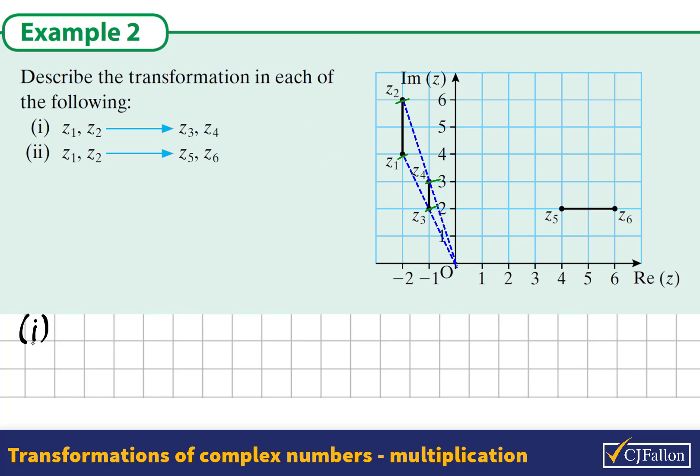We could also work this out because there are numbers given to each of these. However, because there is no rotation and there is a scale factor of a half, the moduli have been reduced by a half. We could say that the mapping is a half of Z1 and Z2 would give us Z3 and Z4. So if we multiply Z1 and Z2 by a half, it would map onto Z3 and Z4.